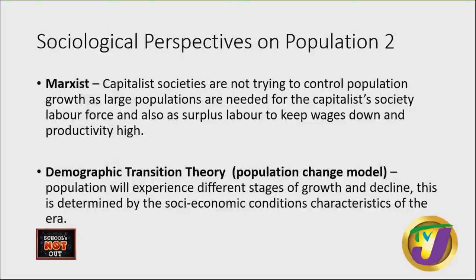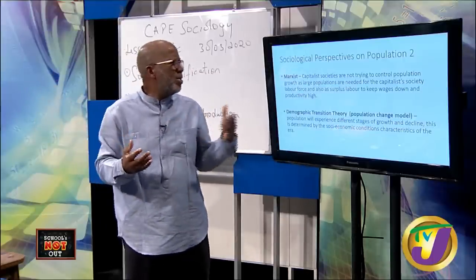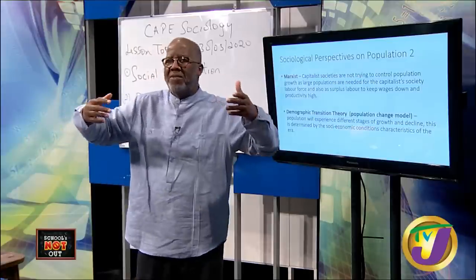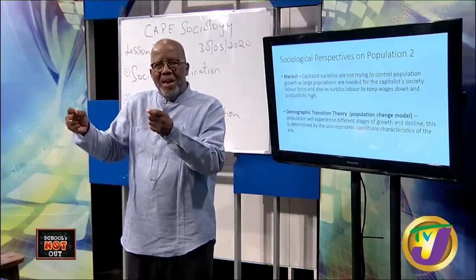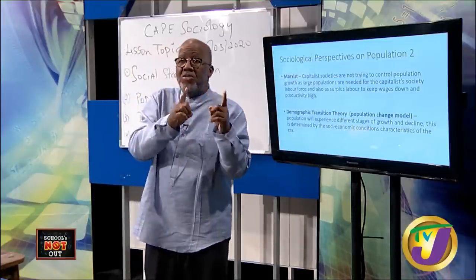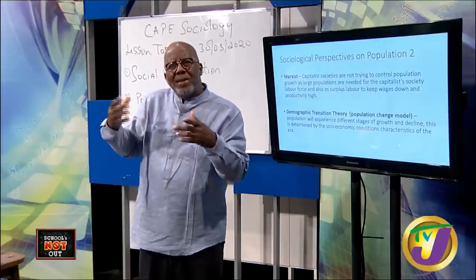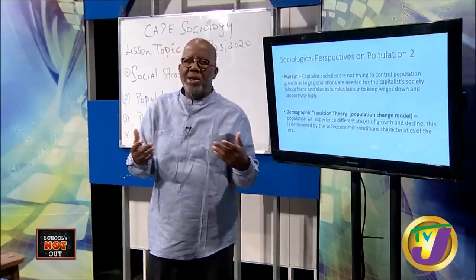The Marxist perspective: capitalist societies are not trying to control population growth, because large populations are needed as a labour force and as surplus labour to keep wages down. They argue we allow the third world to have large populations, which provides labour for developed countries. When you have a large population with many people competing for the same job, you can keep wages down. We can discuss whether this is what happens in the Caribbean.